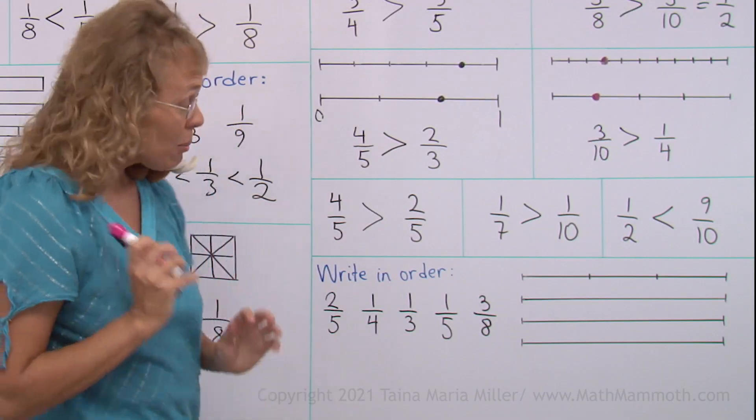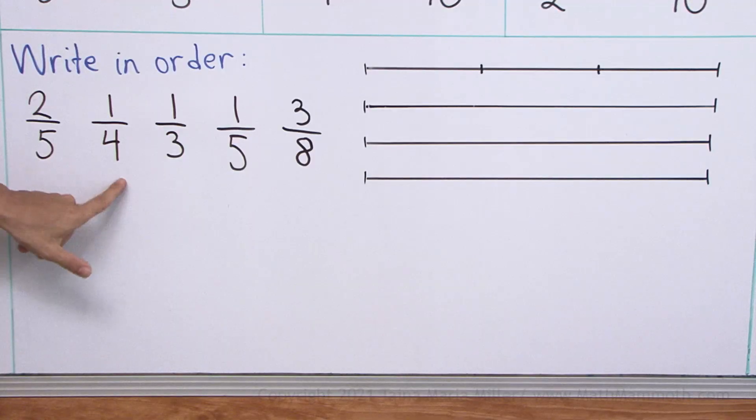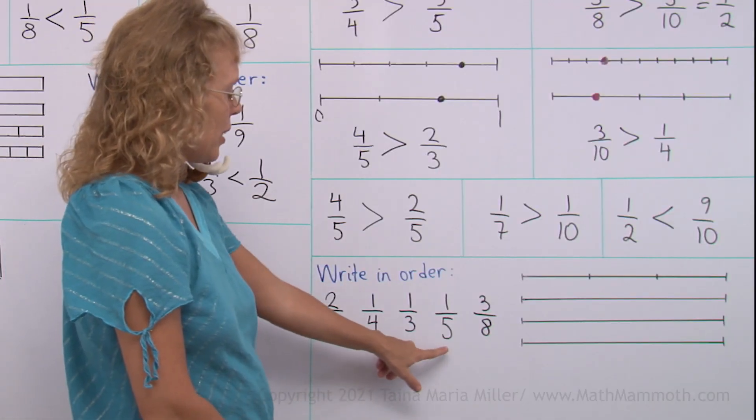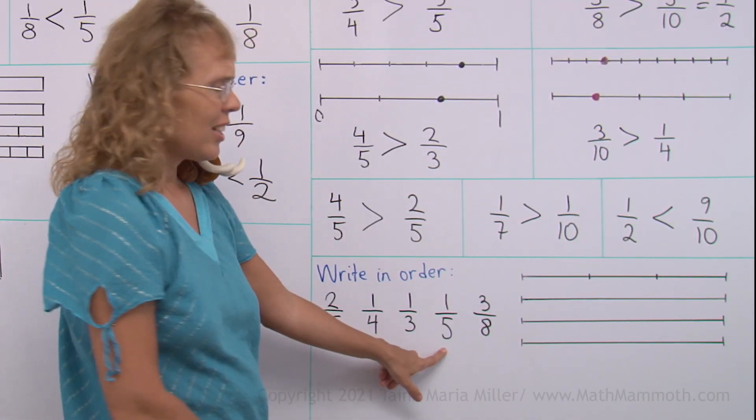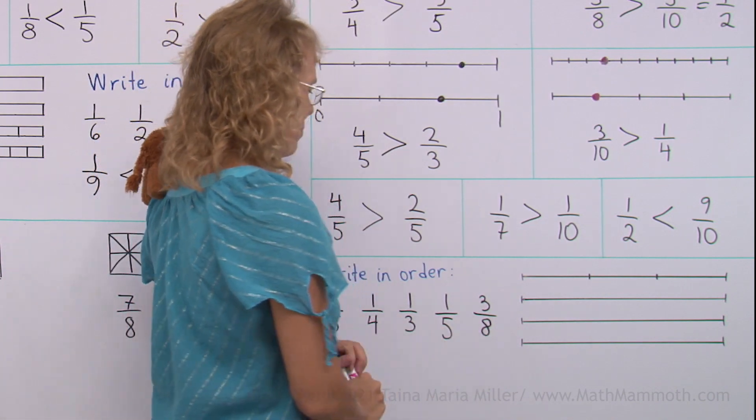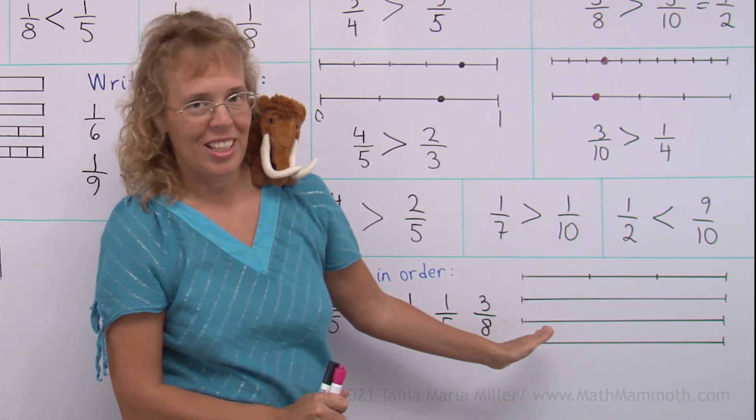Lastly, we have a little bit of a challenge because we need to write in order five different fractions. Some of them would be easy, like these three. You could tell them in order. But these two, I don't know. We can use number lines again. Okay?